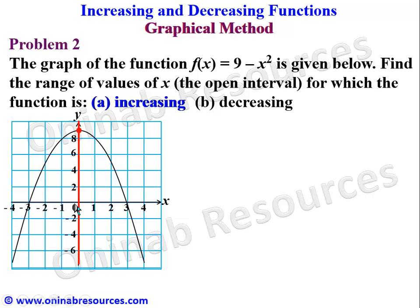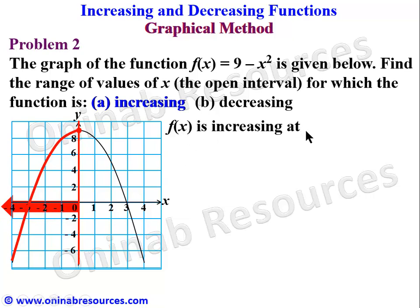Our minimum interval is x = -4 and the maximum at this turning point is x = 0. Moving along the curve up to x = 0, the curve is going up. So f(x) is increasing at x < 0 — that is, from 0 to -1, -2, and so on to negative infinity — stated as the open interval (-∞, 0).